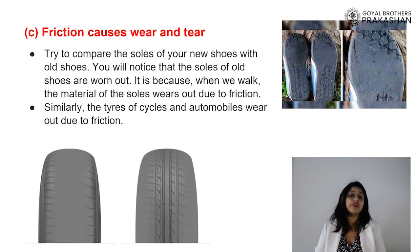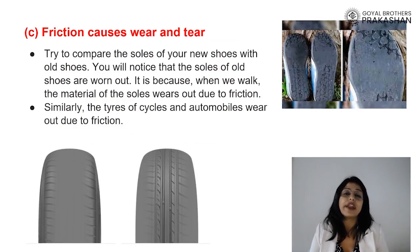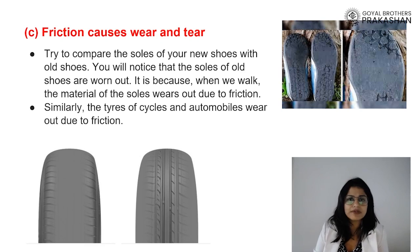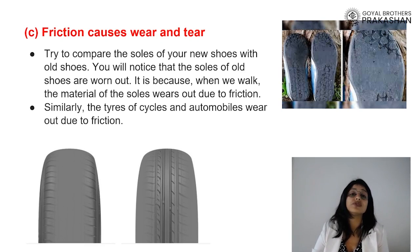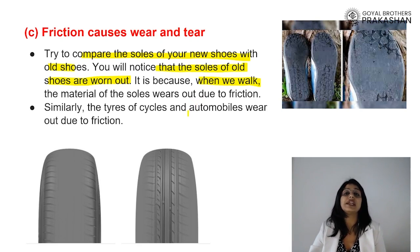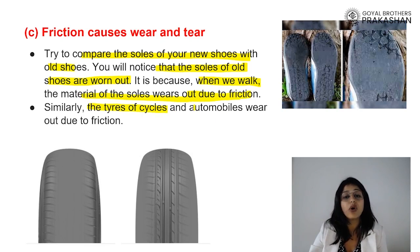Friction can also cause wear and tear. Old shoes lose their sole structure, and old tires lose their tread compared to new ones — this happens because of friction. When we walk, friction wears down the material of the soles. The same happens with the tires of cycles or any automobile, which wear out because of friction.